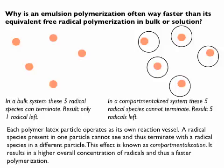Now imagine that all these radicals are in different particles — the picture on the right. If they're in different particles, they can't see each other, which means that the average radical concentration is higher because these radicals can't terminate. We're in a compartmentalized system. Every particle operates as its own reaction vessel, and because whatever is in one particle the other particle doesn't know about, you can artificially get a way greater overall number of radicals in an emulsion polymerization.